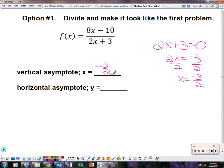Now, the horizontal asymptote, there are two options here. Here is the first option. Divide and make it look like the first problem. So option number one. Let me step through it with you. We take 8x minus 10. We're going to divide it by 2x plus 3.